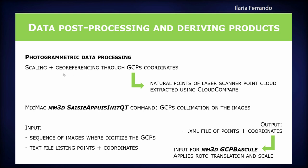The scaling and referencing of the obtained point cloud was done using ground control points — natural points collected in the laser scanner point cloud whose coordinates were extracted using the open source software Cloud Compare. We then used a MicMac command to collimate these points in the images. To make this command work, we need a sequence of images where the points are digitized and a file listing their coordinates. As output, we obtain an XML file containing the points and coordinates, which we use to apply the rototranslation and scaling to the entire model.